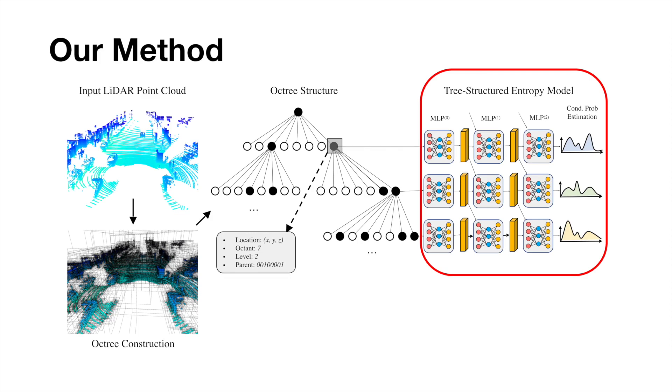Next, we perform entropy coding to further compress this byte stream. The key intuition behind entropy coding is to encode high probability symbols into short codes, after estimating a distribution for each symbol. If our estimates are close to the true distributions, we can achieve lower bitrates. Thus, we designed a tree-structured entropy model that exploits the hierarchical structure of an octree to better estimate the probability of a symbol appearing at each node.